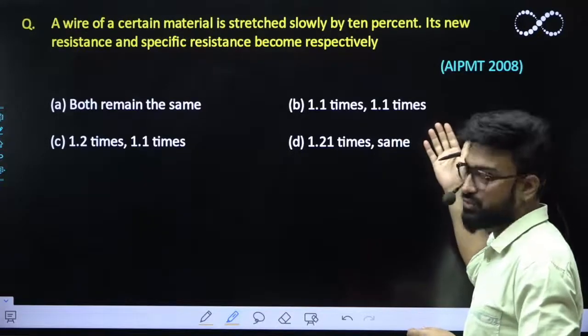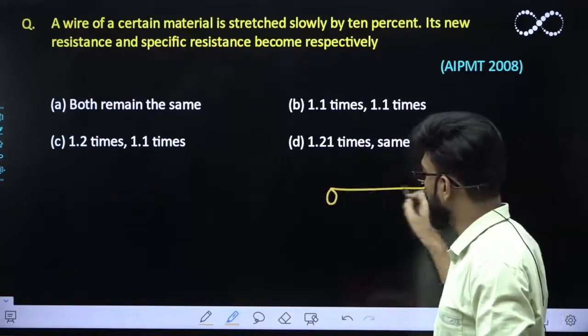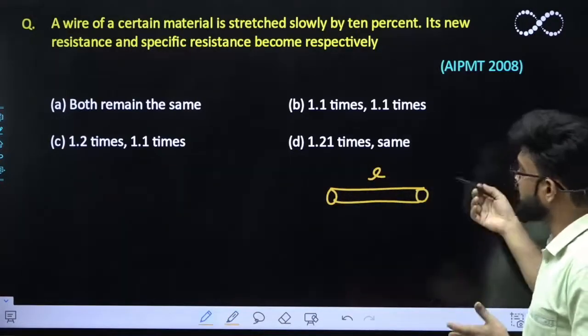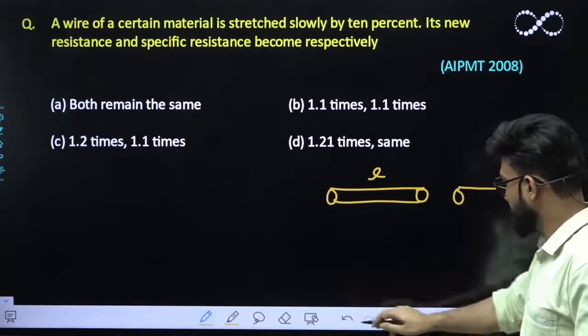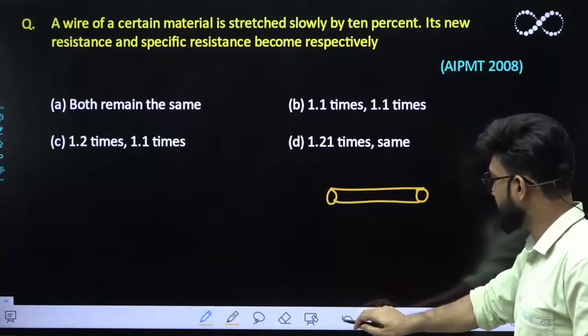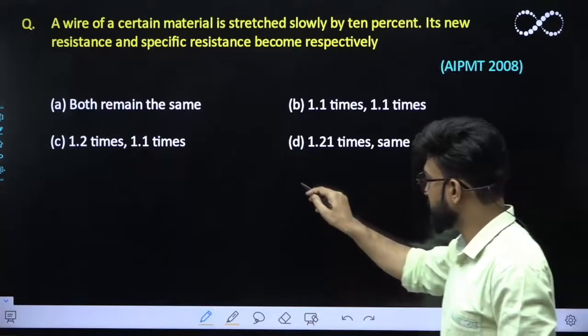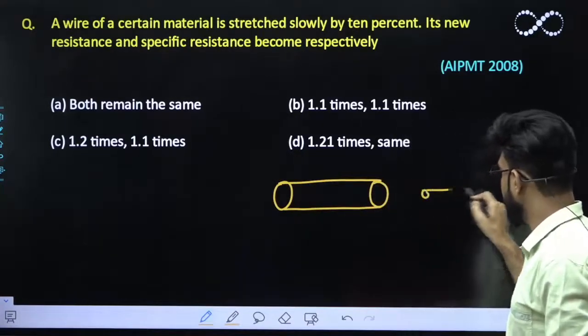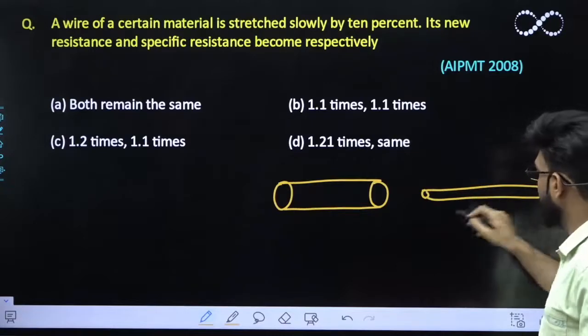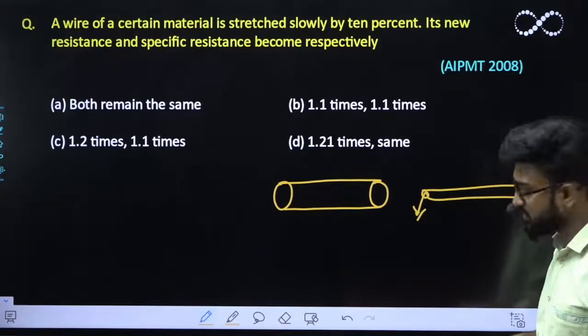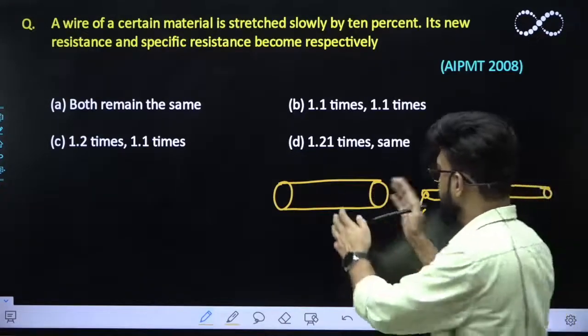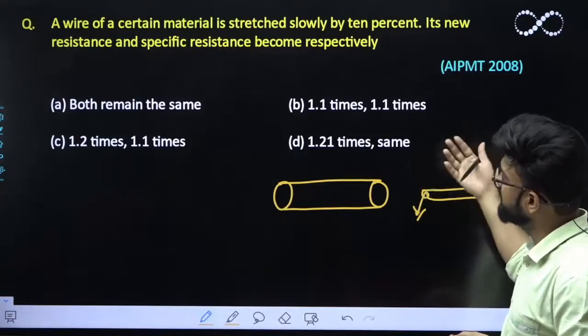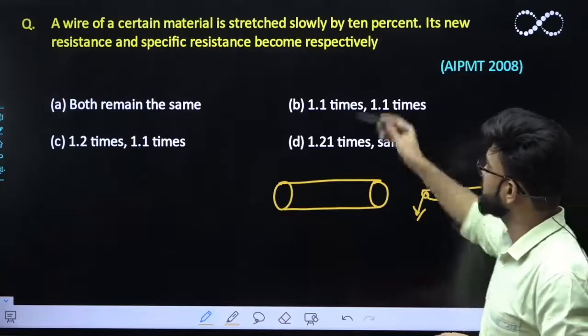So you have been given a wire, let its length be L. Then its length increases. So if its length increases, suppose this is a wire, if its length increases obviously its area decreases. If its length increases then its area would also decrease. Its length is increased by 10% which have been given to you.